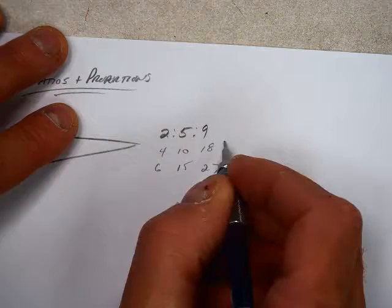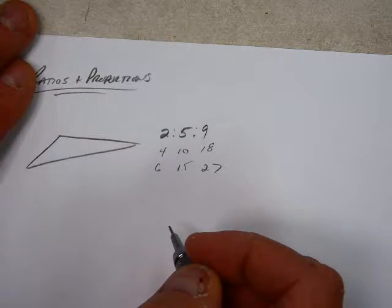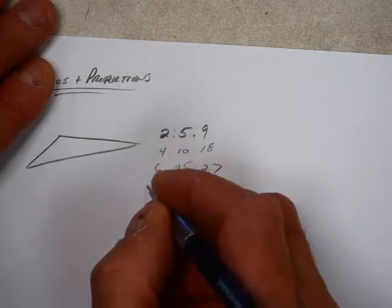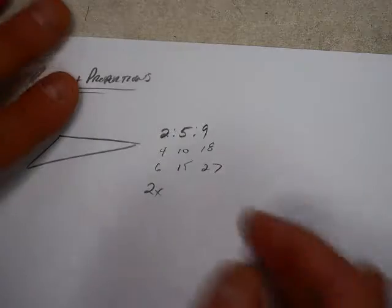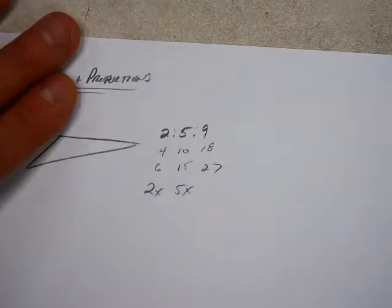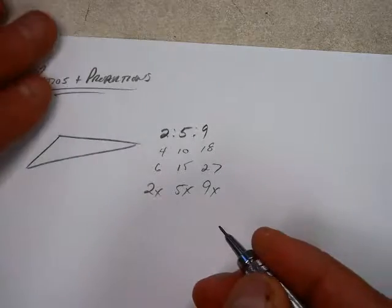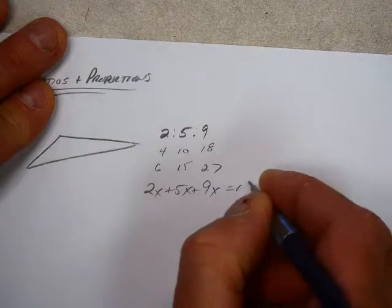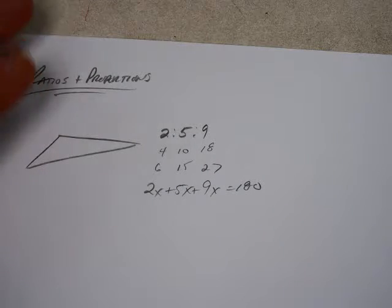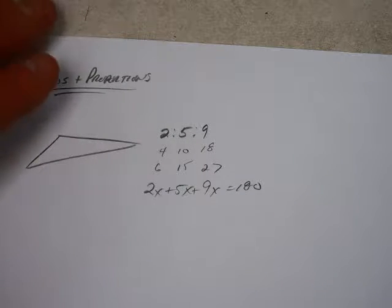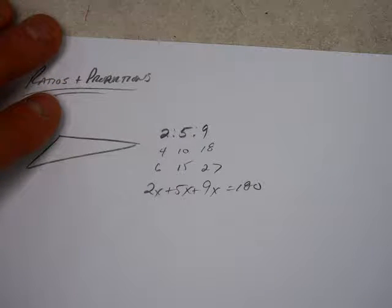If it's 2 to 5 to 9, how could I express the first one? It's something with x. Let's go 2x. Then my second angle would be 5x, and my third angle would be 9x. And what would have to be true about all these three angles? They have to add up to 180. Max hit it very quickly on his calculator. What did you do? What did you type in?